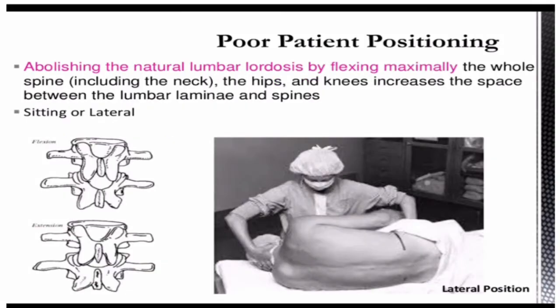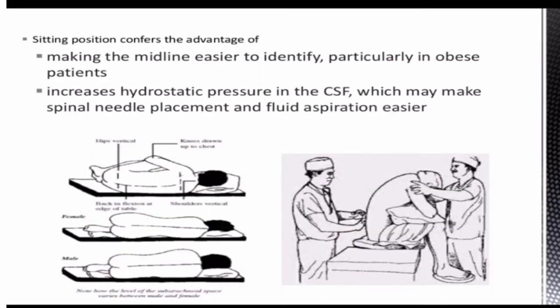During patient positioning, abolishing the natural lumbar lordosis by maximally flexing the whole spine — including the neck, hips, and knees — increases the space between the lumbar laminae and spinous processes. The sitting position confers the advantage of making the midline easier to identify, particularly in obese patients, and it increases hydrostatic pressure in the CSF, making spinal needle placement and fluid aspiration easier.